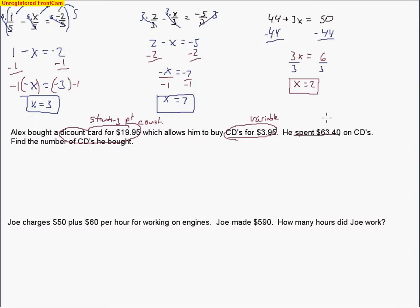So there's going to be a variable attached to it. This is our constant, and we have our variable amount here. He spent $63.40. That's our total. We're setting it up this way. We've got our variable amount plus a constant, and that will equal a total.